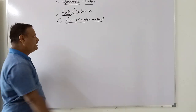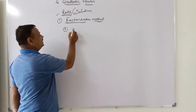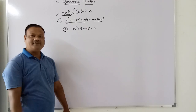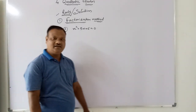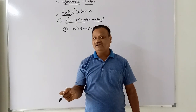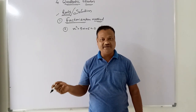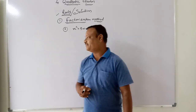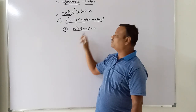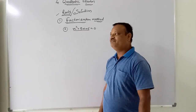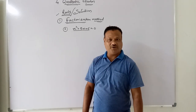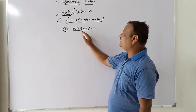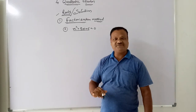For example, we consider x² + 5x + 6 = 0. How do we apply the factorization method? We know that a quadratic polynomial can be factorized by using the splitting middle term method. We have to find the factors of this quadratic polynomial by splitting the middle term. The middle term is 5, so we have to split this 5 into two parts.